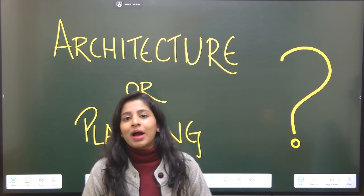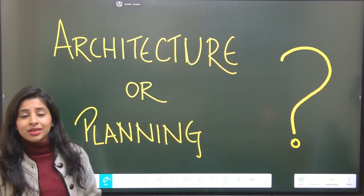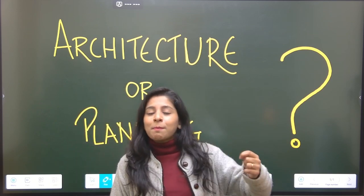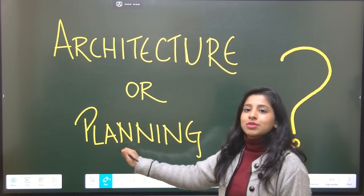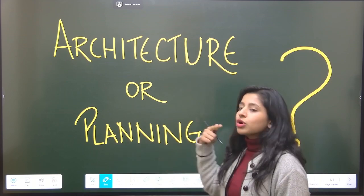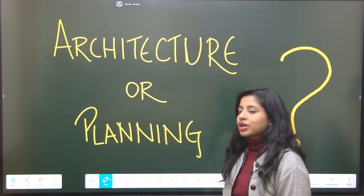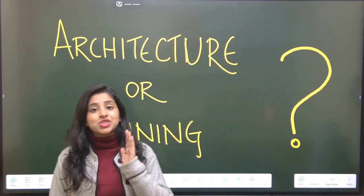Irrespective of your background, you can attempt any section, whichever you feel like. Second confusion that people have: if I want to take up masters in planning, then I can only attempt the planning section. Or if I want to take masters in architecture, then I can only attempt the architecture section. No, that is also a myth. That is not right.